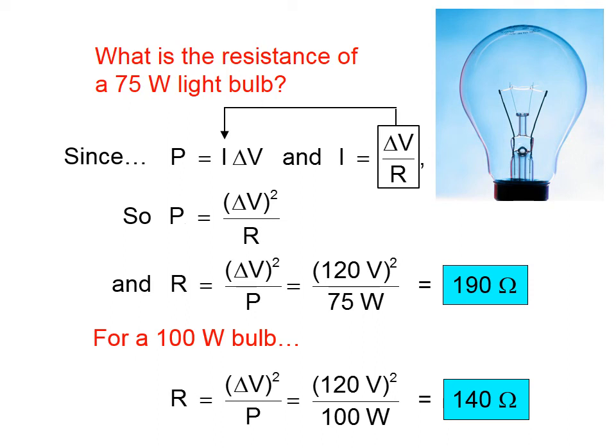Which shouldn't surprise us. For the same pressure difference, 120 volts, we should get more current through a 100 watt light bulb, because we know that 100 watt bulbs are brighter. So for the same pressure difference, we need to have a lower resistance to get that higher current.